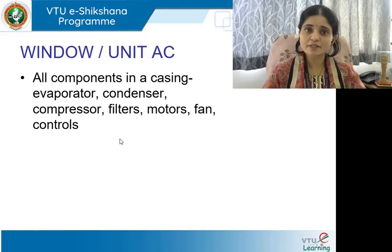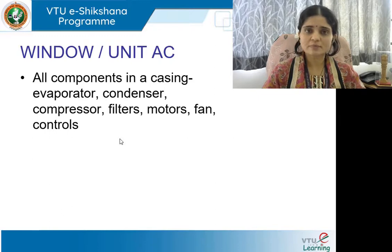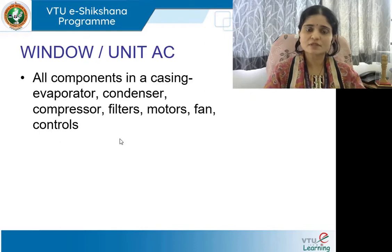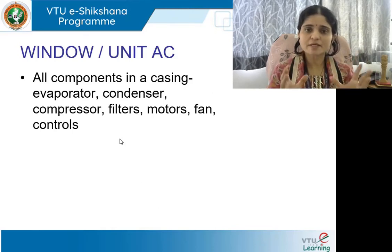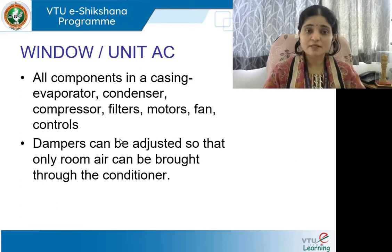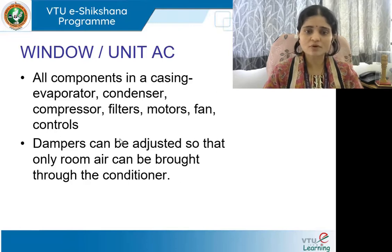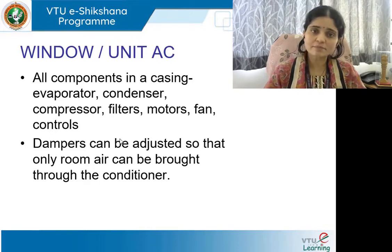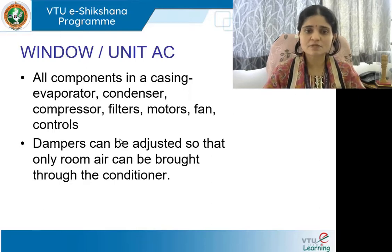The refrigeration cycle is the basis for air conditioning. All components — evaporator, condenser, compressor, filters, motors, fans, controls, piping through which the refrigerant flows, damper, and thermostat — are all arranged and embedded in a metal casing and are factory assembled. Dampers are small openings or shutters that can be adjusted so that only room air is brought through the conditioner, controlling how much air and what air comes in and out of the system.